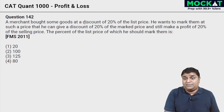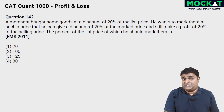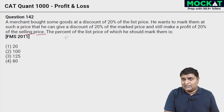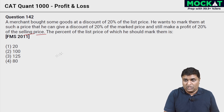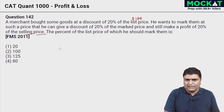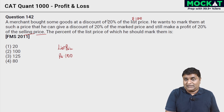On to question number 142. A merchant bought some goods at a discount of 20 percent of the list price. He wants to mark them at such a price that he can give a discount of 20 percent of the mark price and still make a profit of 20 percent of the selling price. We need the percentage of the list price at which he should mark them. Since everything is in percentage terms, let us assume list price equals rupees 100.